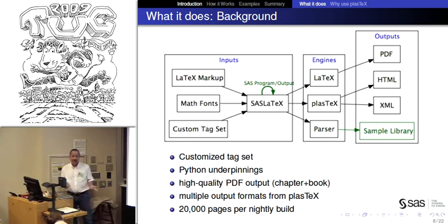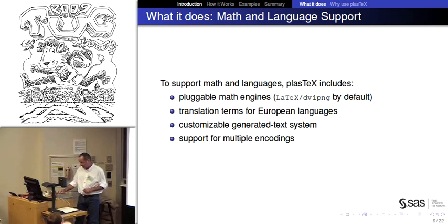And then we send it also through PlasTeX to get HTML and XML. So we have a customized tag set. Everything's written in Python. And so the whole point is to get high quality PDFs and we give those out as books and as chapters. One of the books we produce is the SAS/STAT User's Guide. It's a pretty good stress test because it's 8,000 pages and we produce it all as one document and we create it as chapters. But lots of hyperlinks, lots of output, a whole lot of math and a lot of code. And each night we build the system and we get about 20,000 pages per nightly build.